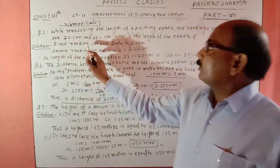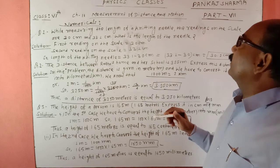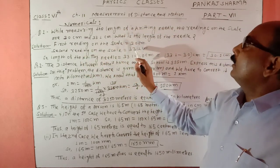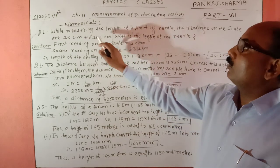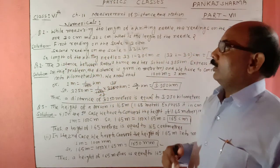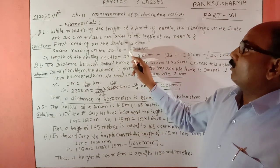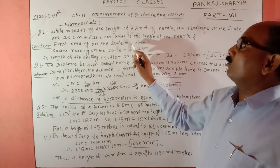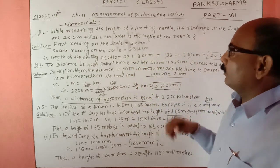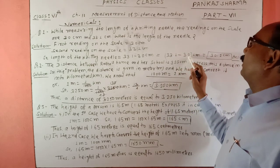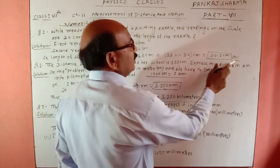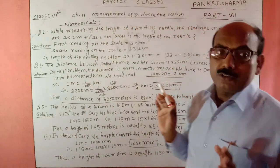Solution: Second reading से first reading को minus करते हैं। 33.1 – 3.0 cm. इसको subtract करेंगे तो हमारा value आता 30.1 cm. These are the answer of this question.